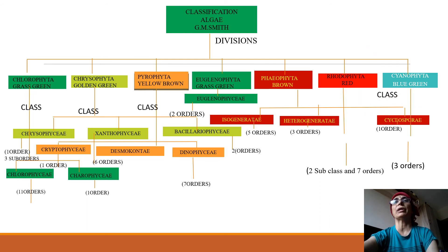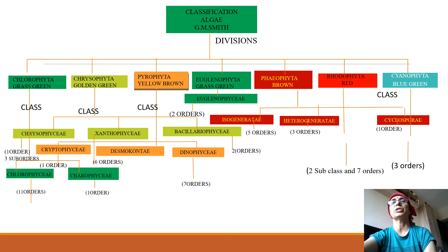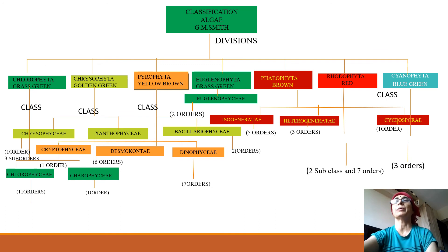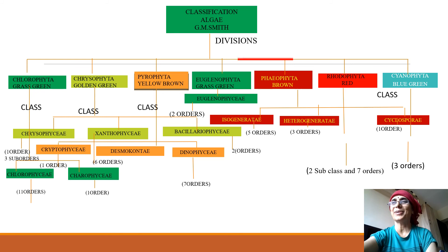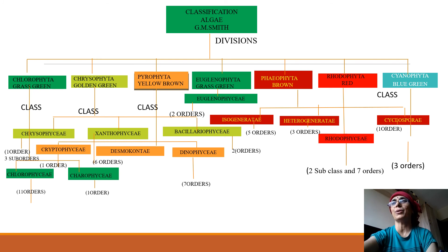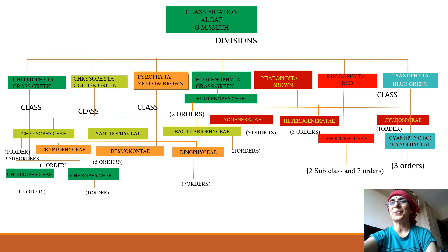In Isogeneratae, isomorphic alternation of generation takes place and it has five orders. In Heterogeneratae, heteromorphic alternation of generation takes place and three orders are present. In Cyclosporae, the life cycle is diplontic and there is only one order in this group. Rhodophyta division has only one class, Rhodophyceae, comprising two subclasses and seven orders. Cyanophyta is divided into one class, Cyanophyceae or Myxophyceae, comprising three orders.